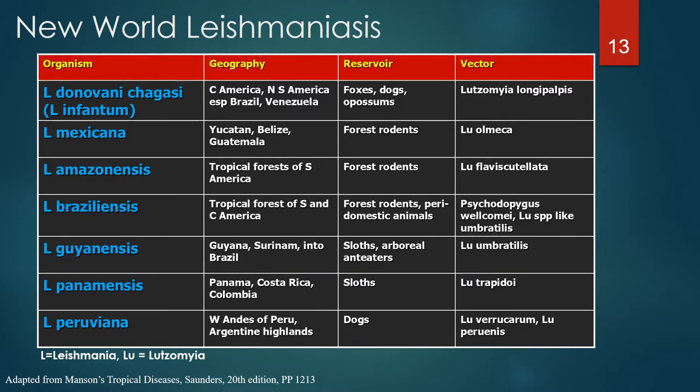There are seven organisms representing New World leishmaniasis: Leishmania donovani shigasi, mexicana, amazonensis, braziliensis, guyanensis, panamensis, and peruviana. These organisms are found primarily in Central and South America. Reservoirs include canines, opossums, rodents, sloths, and anteaters. The vector is the New World sandfly, Lutzomia and Psychodopagus volcomi, similar to Lutzomia umbratilis.